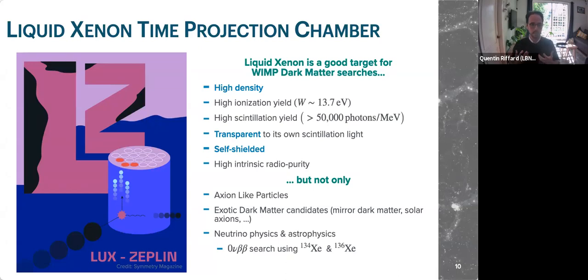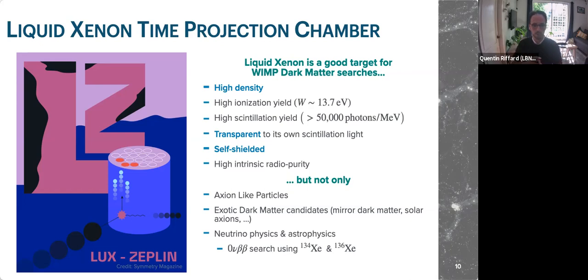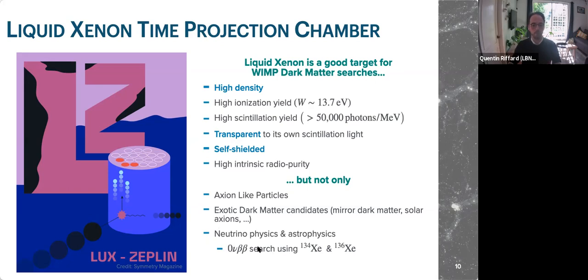For WIMPs, we use the liquid xenon time projection chamber technology, which is a great target because it has high density, high ionization and scintillation yield, and is transparent with its own scintillation light. This means we can extract a signal from it. We also have the effect of self-shielding and high intrinsic radiopurity, meaning the xenon used for detection is very pure. It can also be used to search for light particles, exotic dark matter candidates, and nuclear science such as neutrinoless double beta decay.